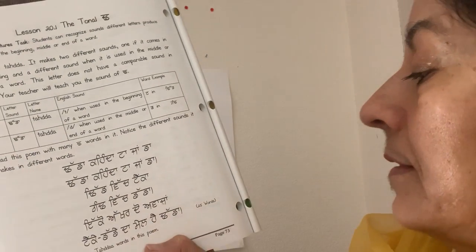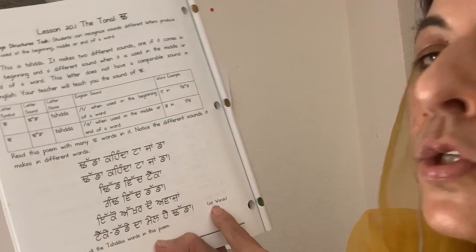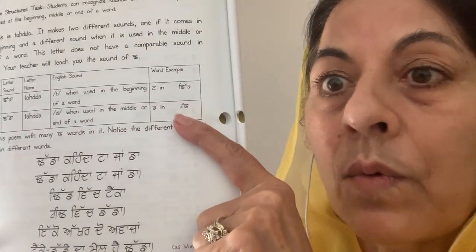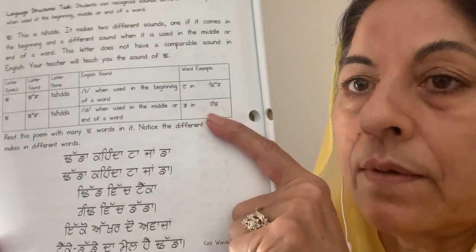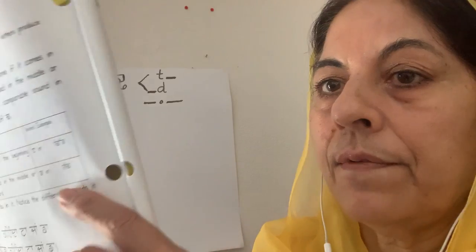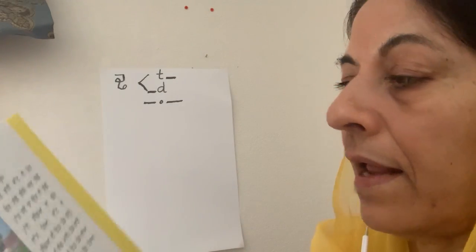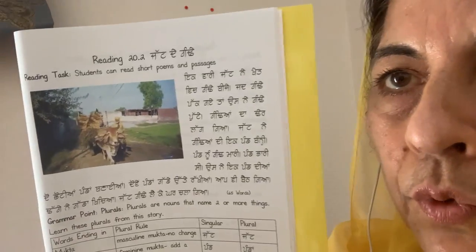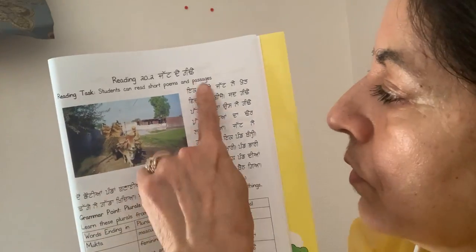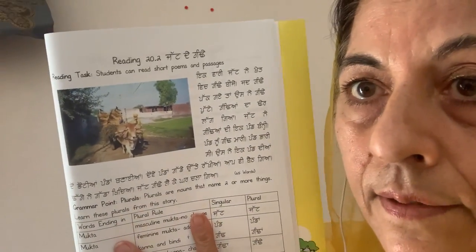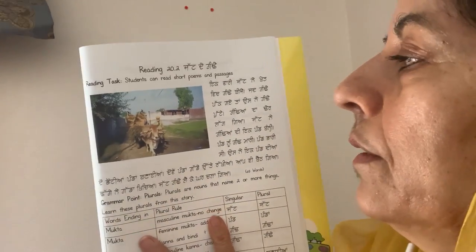There are only 25 words in this poem and you should be able to read this poem in one minute. So after we stop the video, you're going to read this poem again. Here's a short story and this also has lots of Tadda words in it.